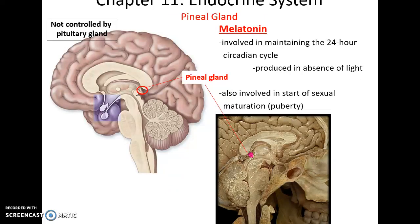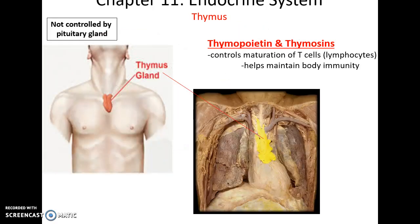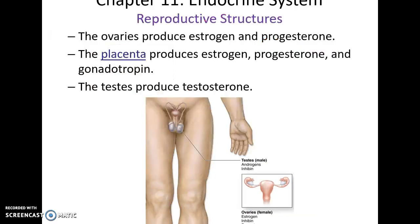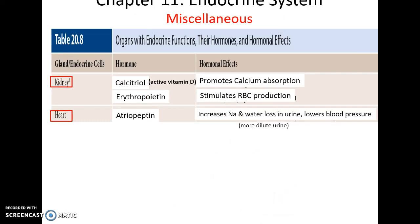Melatonin is produced by the pineal gland and helps generate our sleep-wake cycle. When there's no light, melatonin is released, causing us to get sleepy; when there's plenty of light, it is not released. The thymus releases hormones — thymopoietin and thymosin — that lead to the maturation of T-cells, important for immunity. The ovaries produce estrogen and progesterone; the placenta also produces progesterone. The testes produce testosterone. Other structures like the kidneys and heart also produce hormones that are very important for the body.